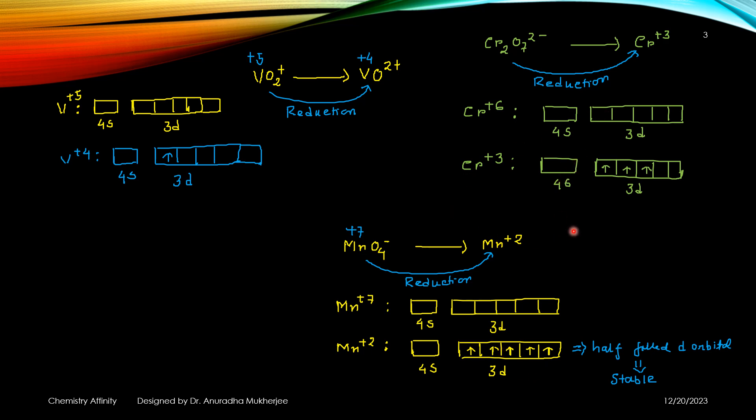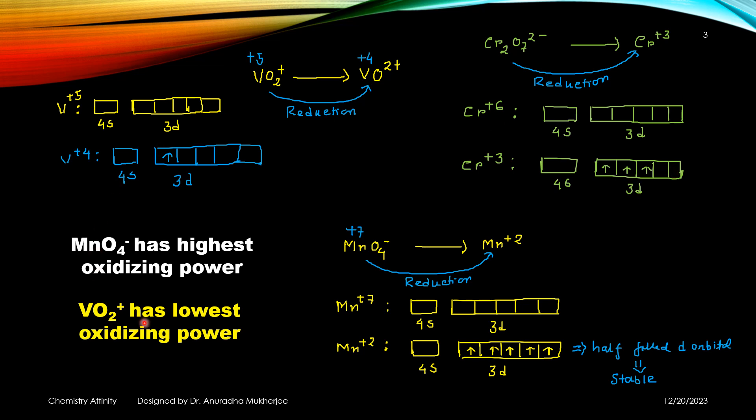But in other cases, we can see that chromium plus 3 is D3 and vanadium plus 4 is D1. Since this reduction is a feasible reduction due to stability of electronic configuration, that's why MnO4- acts as a strong oxidizing agent. It oxidizes other elements but itself gets reduced to manganese plus 2 to get a half-filled d orbital configuration. That's why MnO4- has highest oxidizing power and VO2+ has lowest oxidizing power.